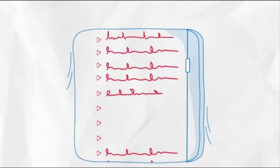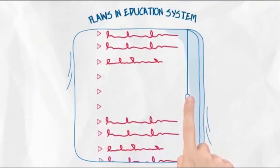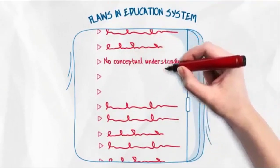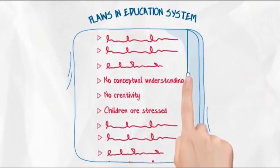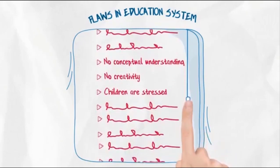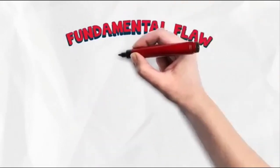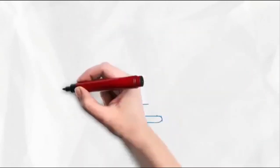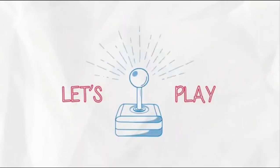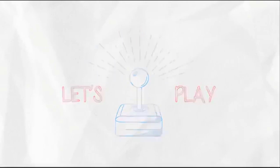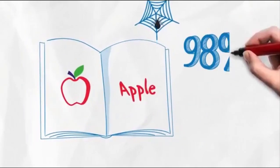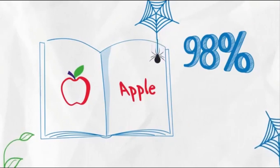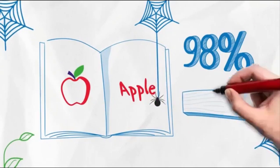For decades, people have been finding hundreds of flaws in the education system: no conceptual understanding, no creativity, children are stressed — and the list goes on. But what is the root cause? What is the fundamental flaw? Let us play a rapid fire game — you have one second to answer every question. The letter A — did you think 'apple' first? 98% of people are most likely to think so, because that is what we were told in kindergarten.